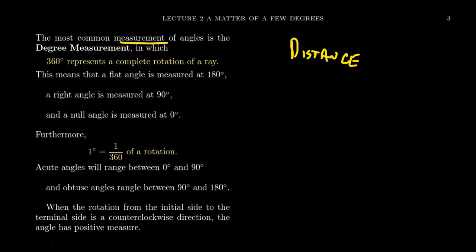The distinction between length, width, and height has to do with direction. Length and width usually represent some type of horizontal thing. Height often represents a vertical distance. Again, those are kind of just words that have sort of colloquial meanings, but they all represent distances.